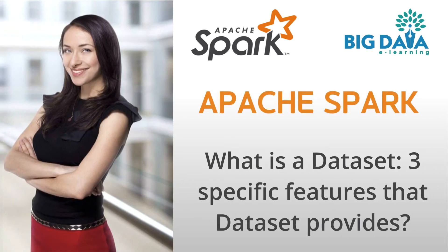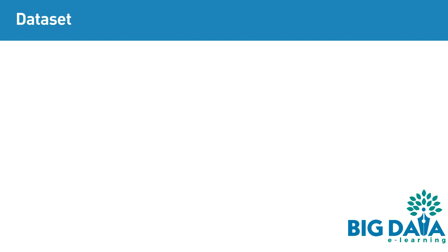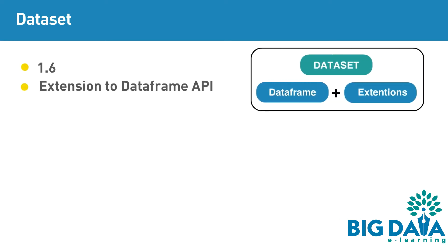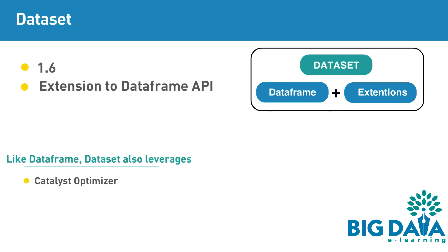What is a Dataset? There are three specific features that Dataset provides. Dataset was introduced in Apache Spark 1.6 release, which is an extension to the earlier DataFrame API. Since it is an extension to the DataFrame API, like DataFrame, Dataset also leverages the Catalyst Optimizer and the Tungsten component.